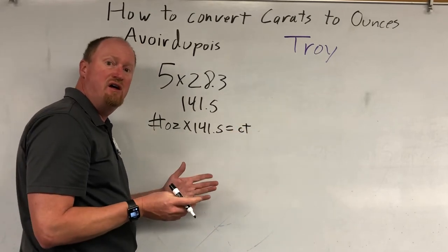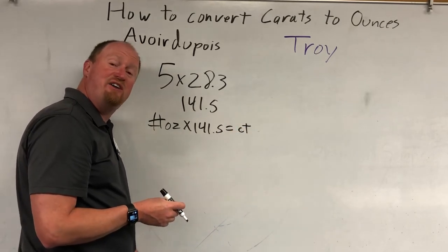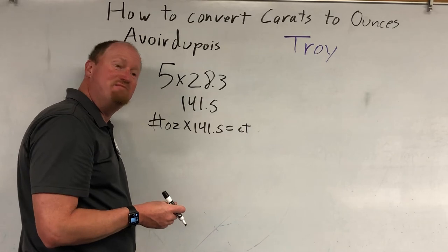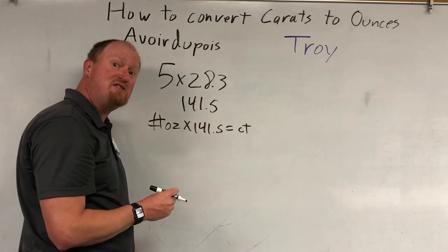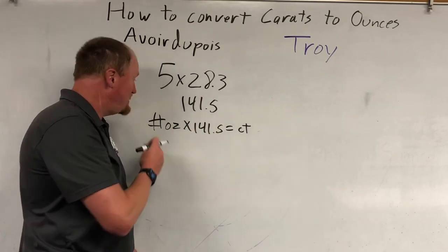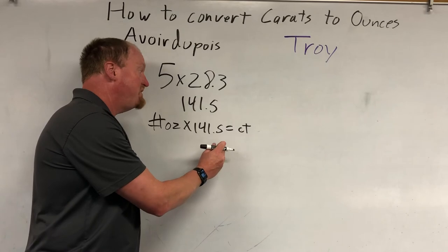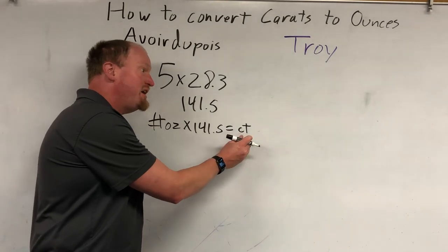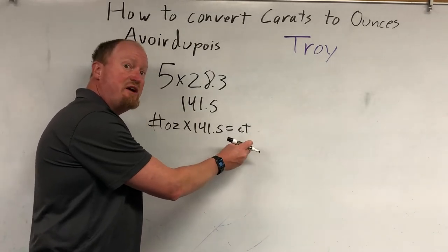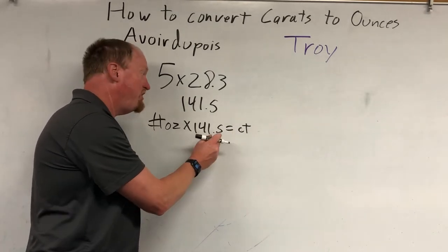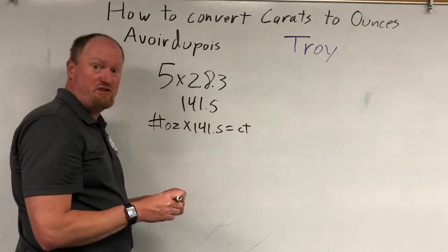Now, this is actually not how you do it — but this is completely mathematically correct. You multiply the number of ounces by 141.5 to get the number of carats. To go the other way, take the number of carats and divide it by 141.5 to get the number of ounces.